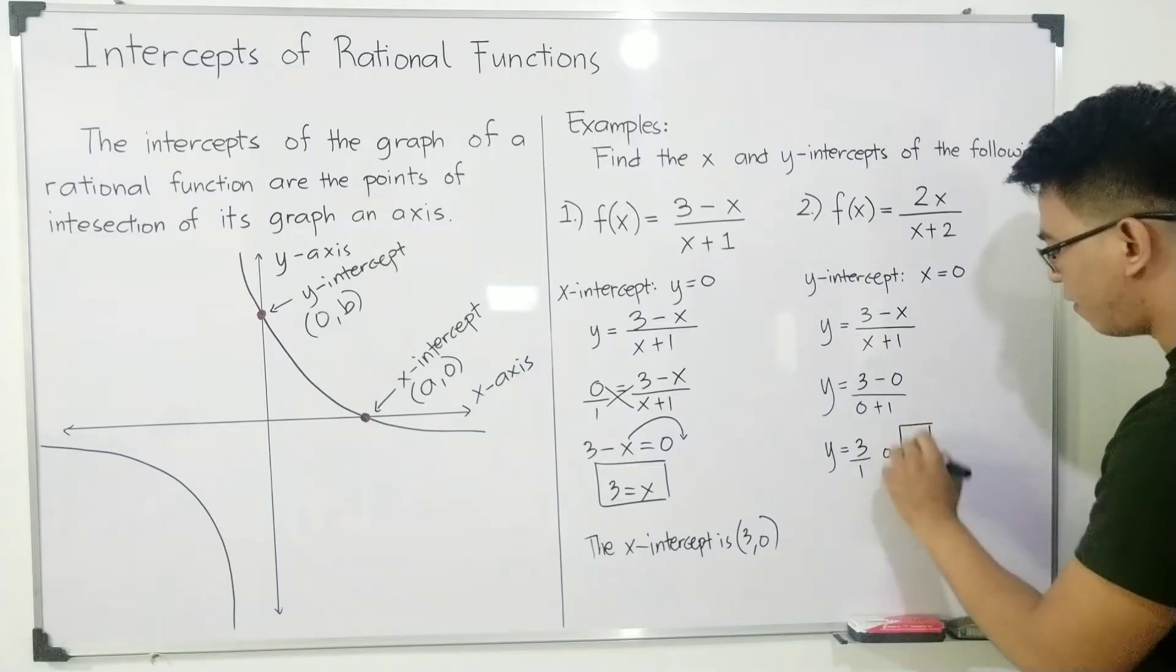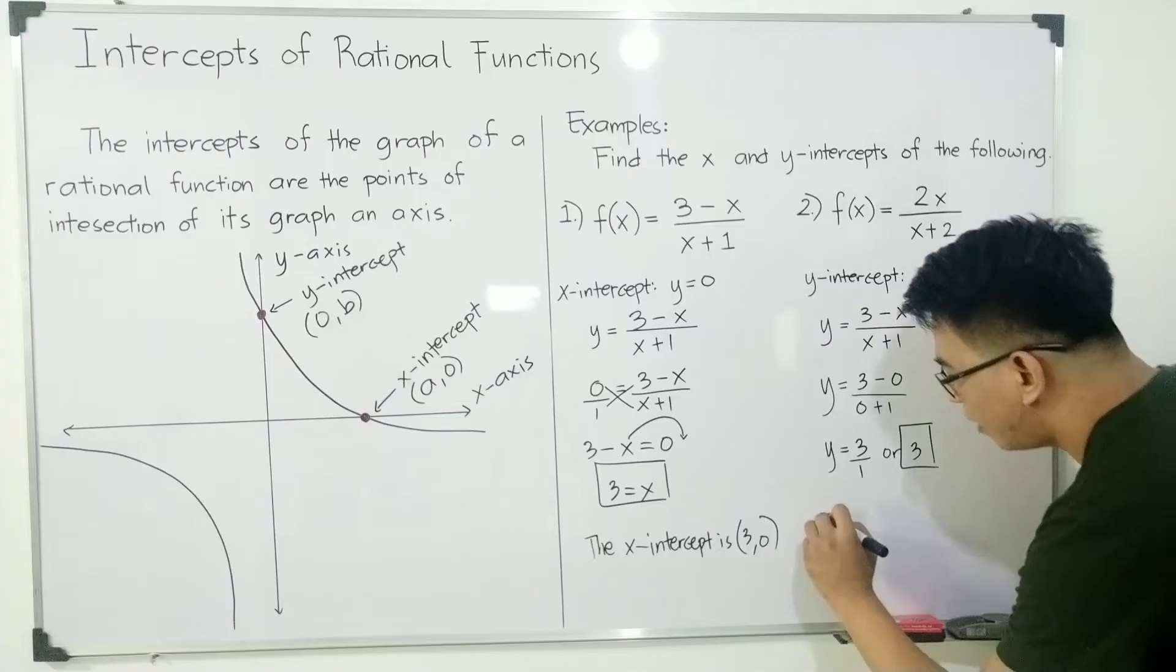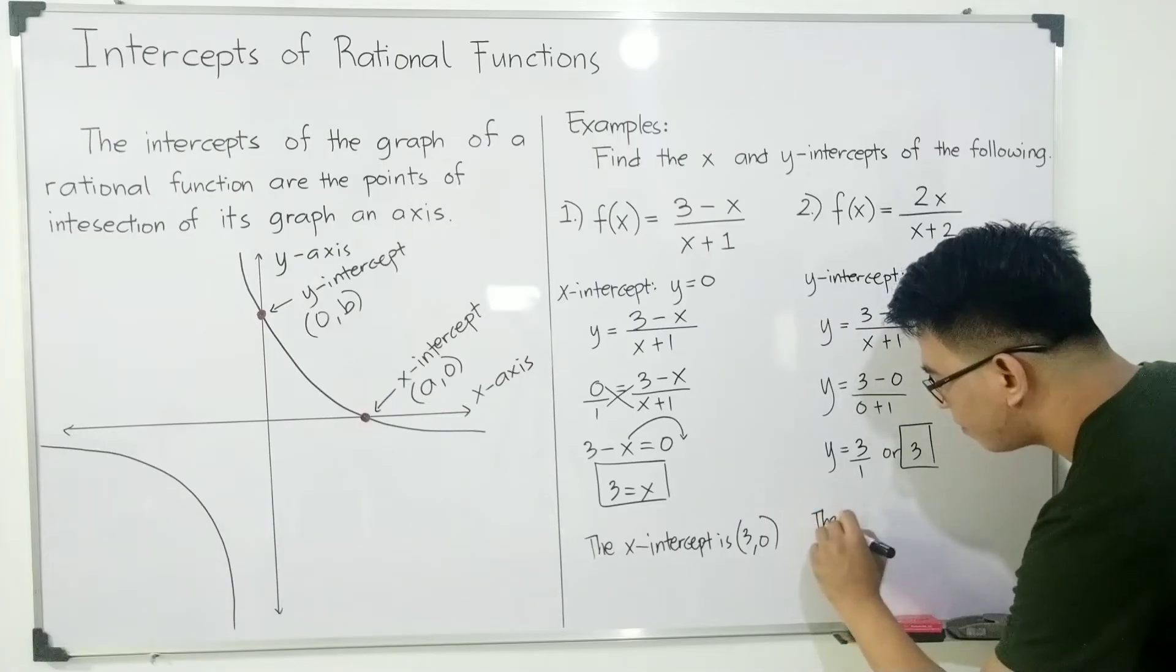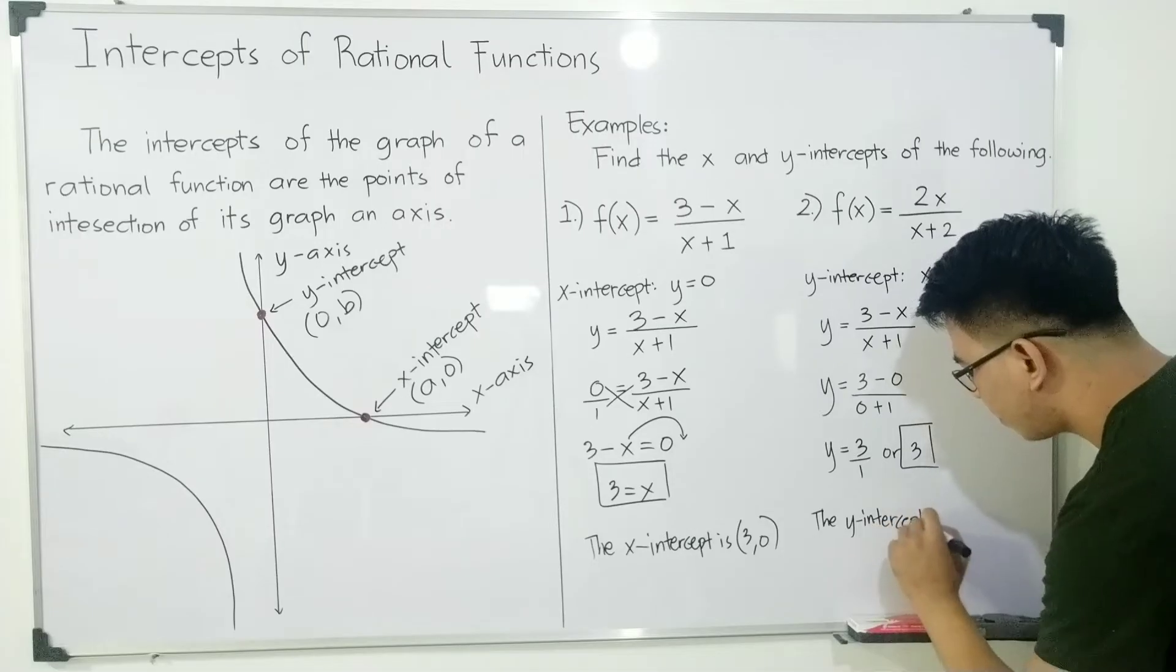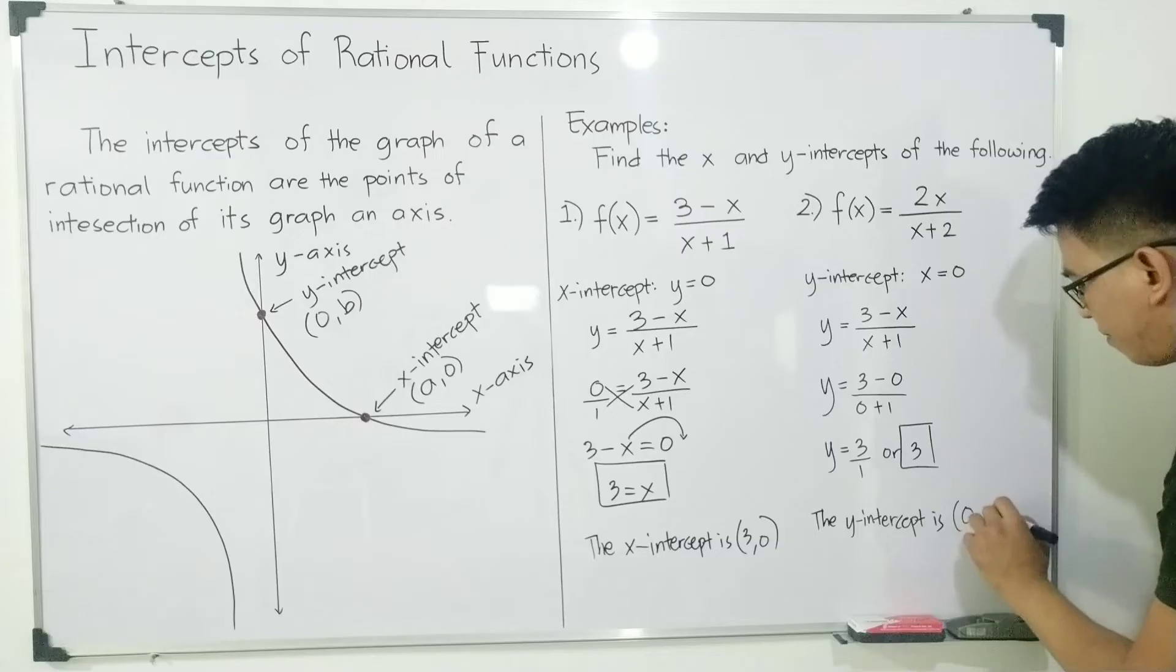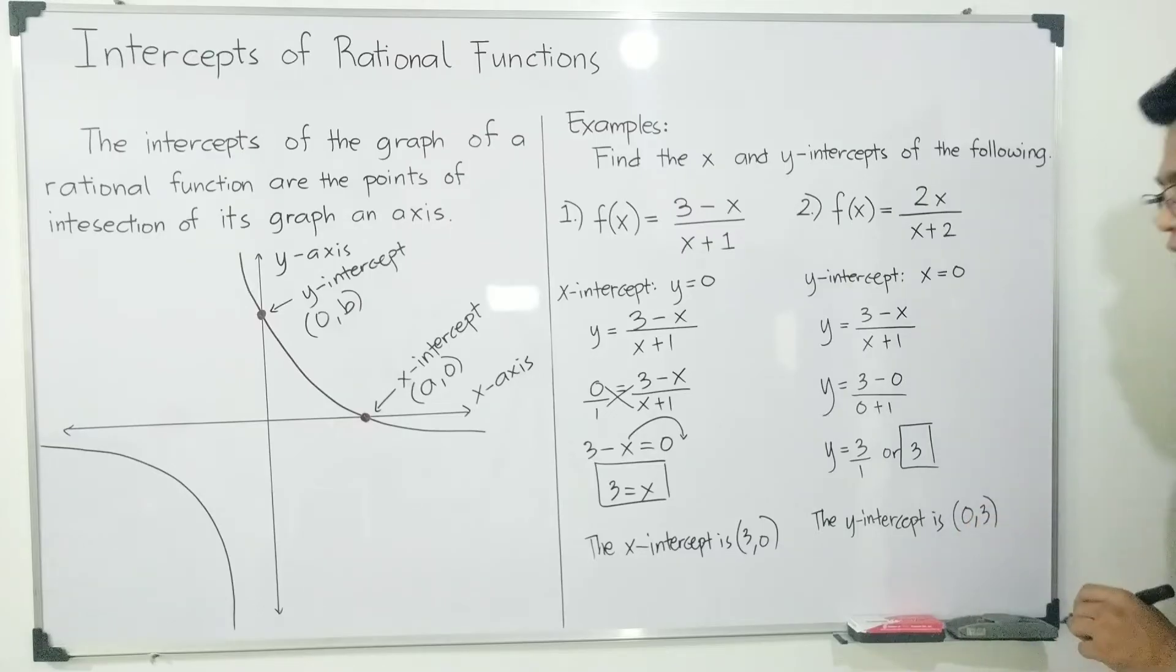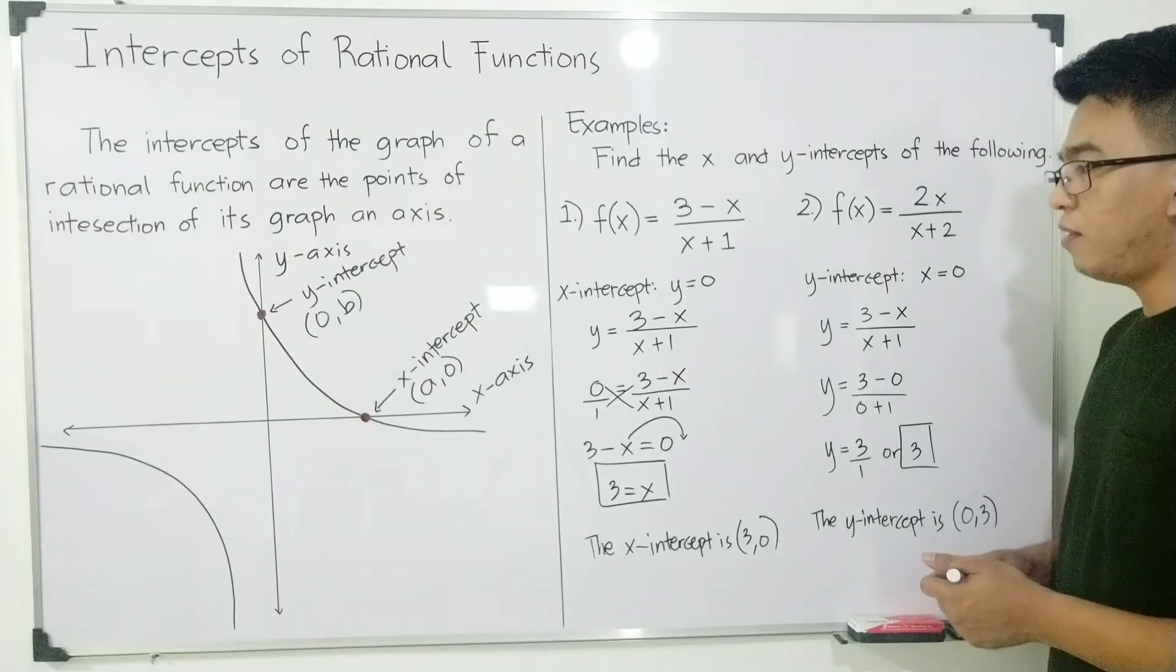This is the actual answer for the y-intercept. So we have here, the y-intercept is (0, 3). This is our x and y-intercept for item number 1.